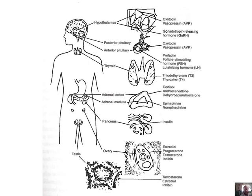You don't necessarily need to know exactly where the pituitary and hypothalamus are, but it is quite important. The hypothalamus is that tiny triangular block right at the top, and then you've got the entire pituitary gland beneath that. This is a quick learning opportunity to go through all the different hormones produced by each of these different target organs.